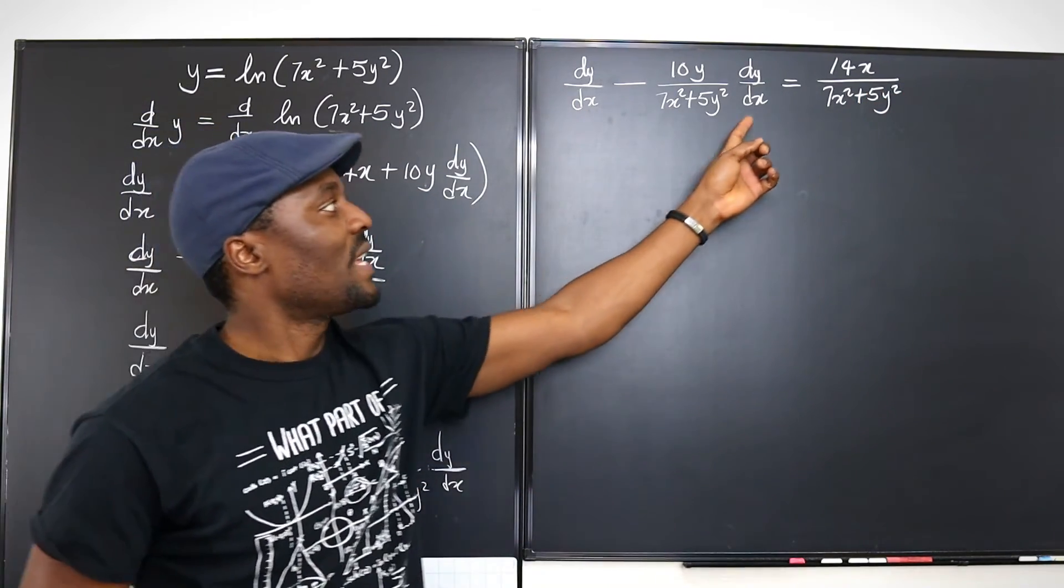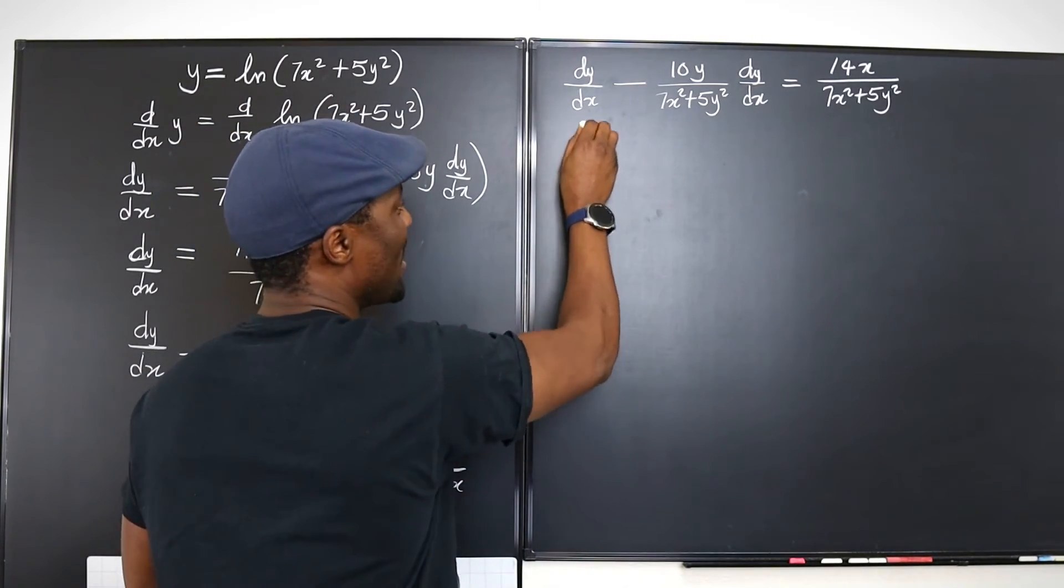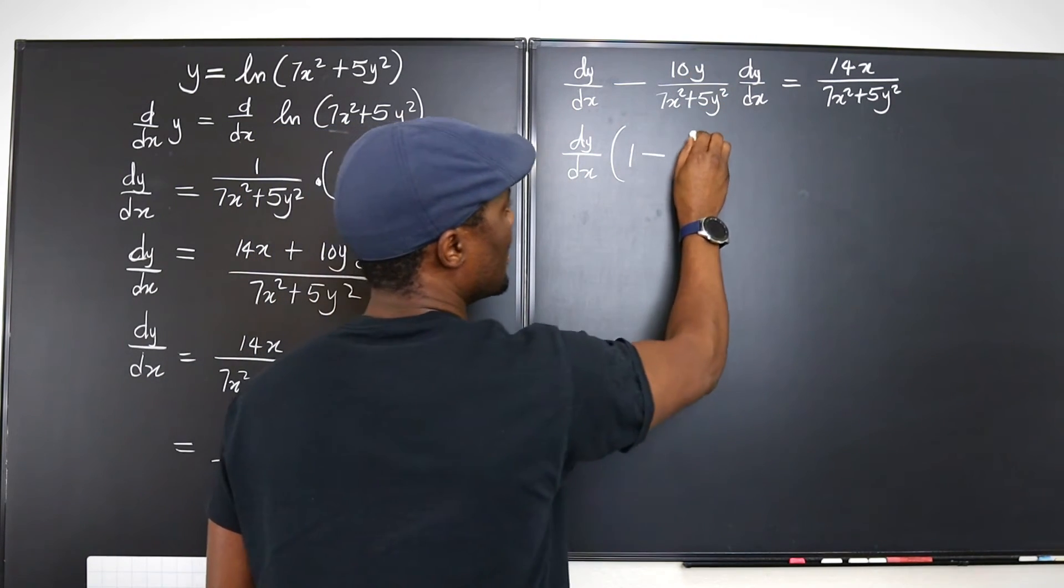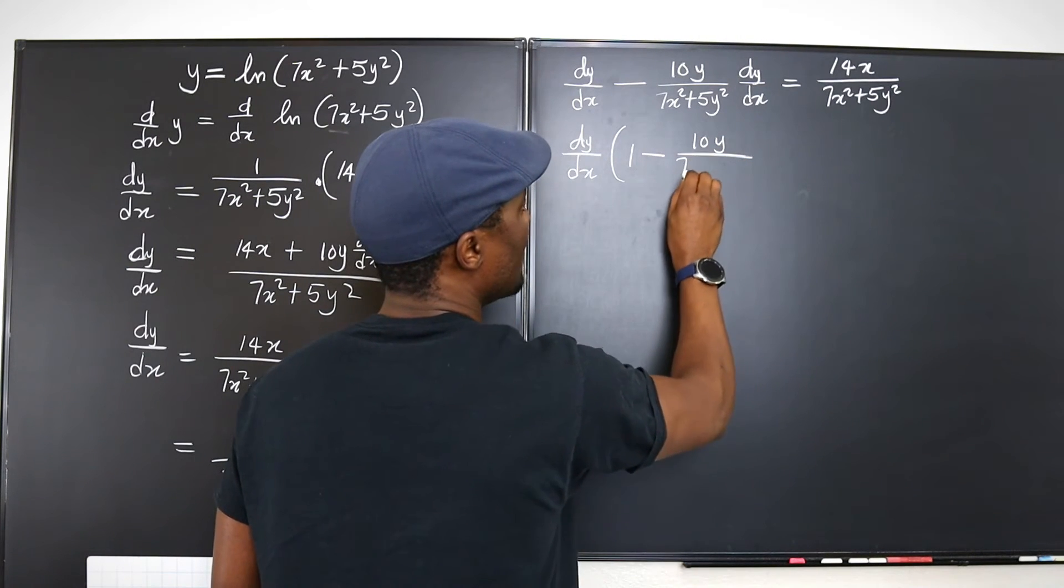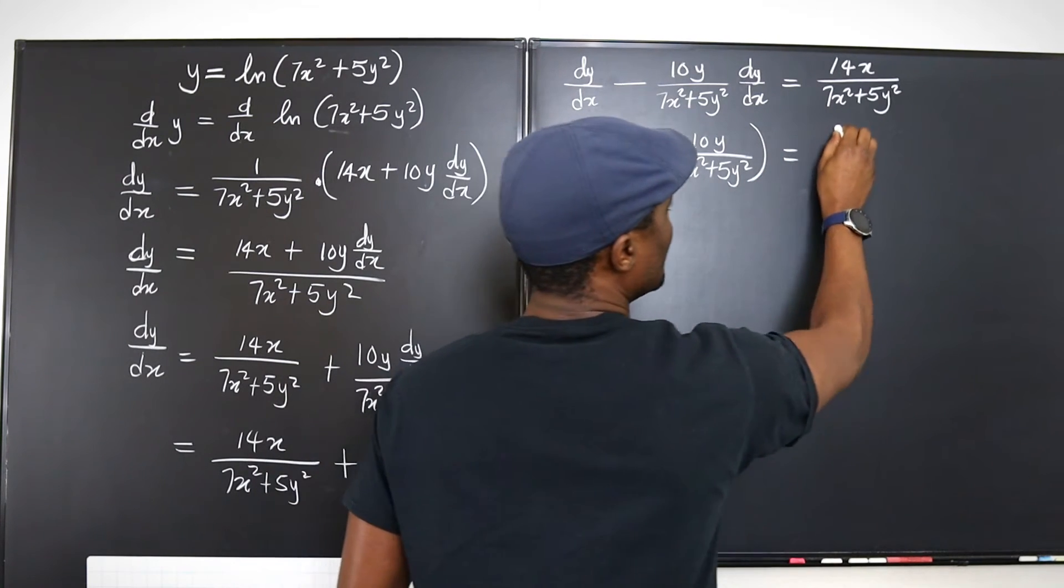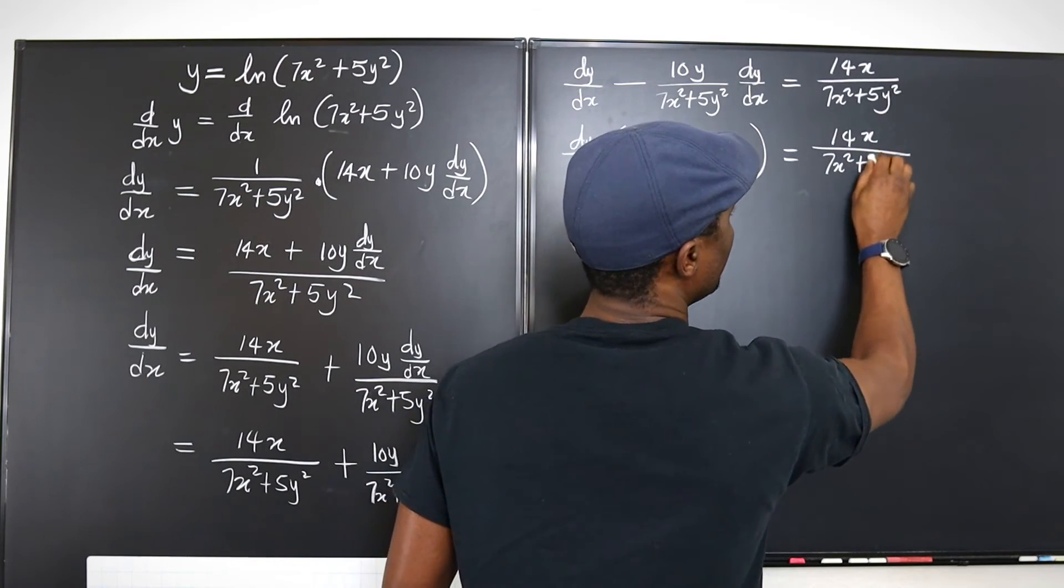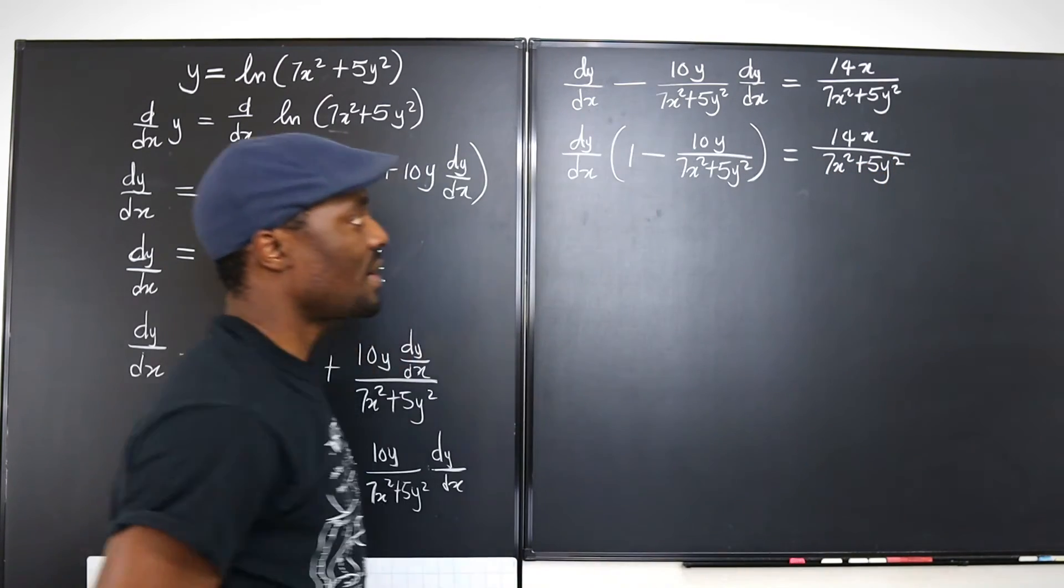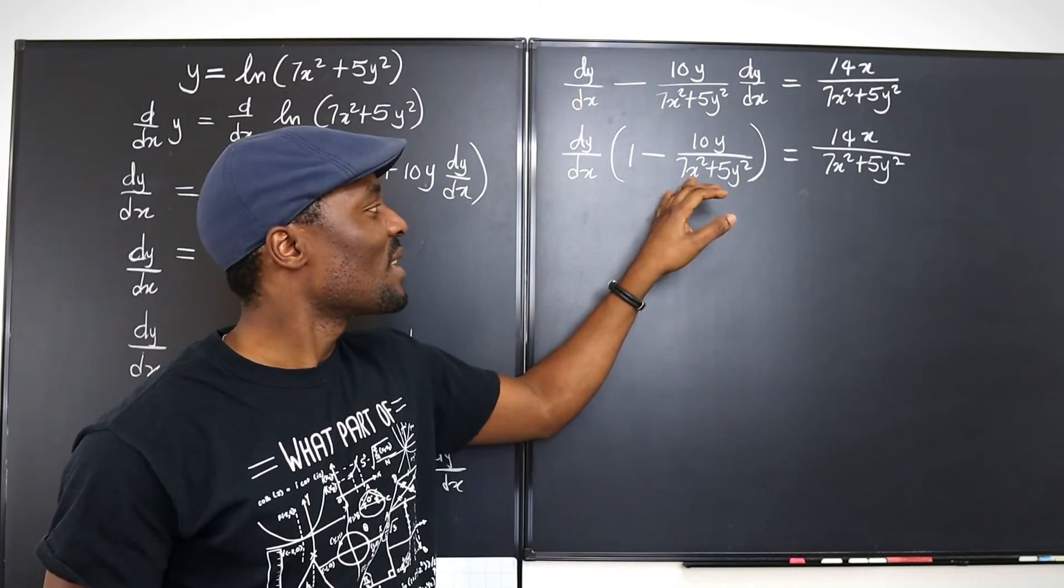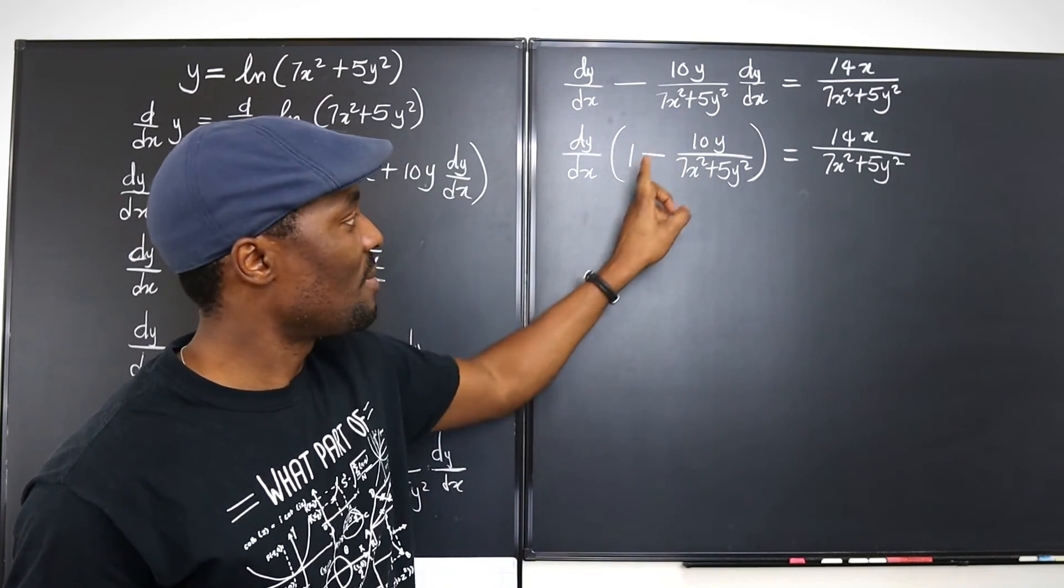So now we can get our dy/dx by isolating dy/dx. Let's factor out dy/dx. So you have dy/dx into (1 - 10y/(7x² + 5y²)) is equal to 14x/(7x² + 5y²). Now we just divide both sides by this. But before we do that, let's clean this up. Let's make it just one rational expression.